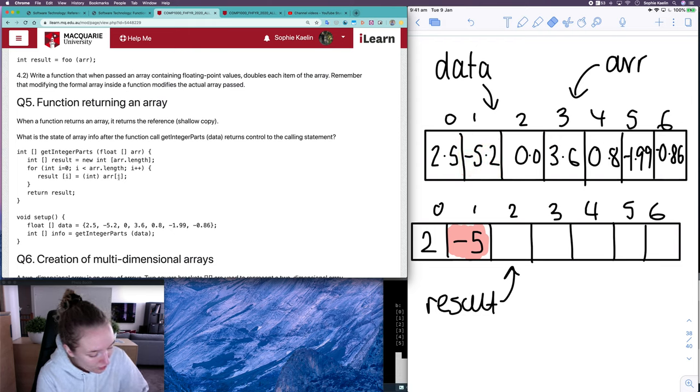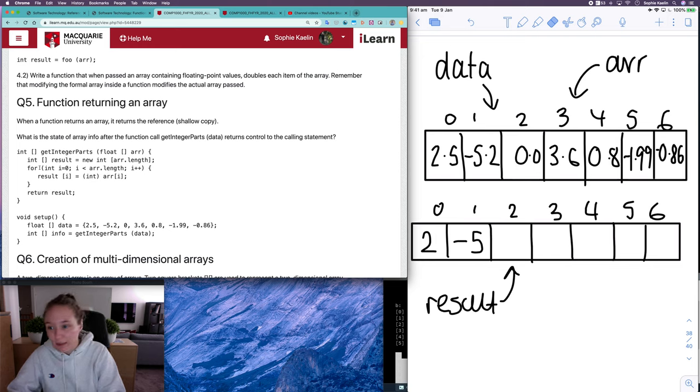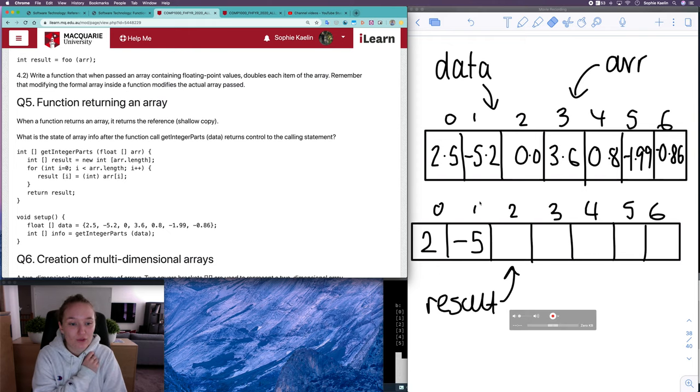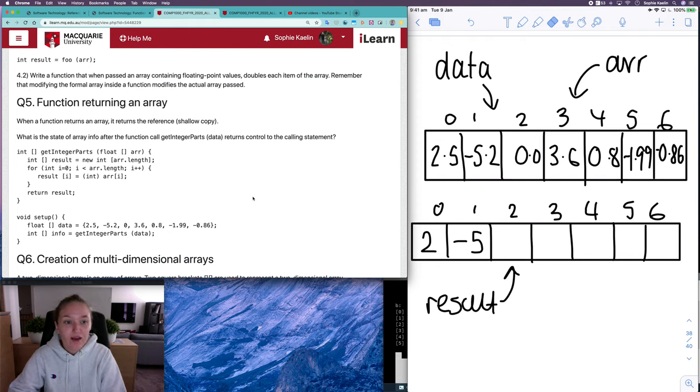So we don't have to trace this loop so carefully because we know exactly what it's doing. It's the same loop we've seen many, many times now. So what we can do is just one by one going through each of the indexes in our array, copy over each value, but copy over the int value of that.